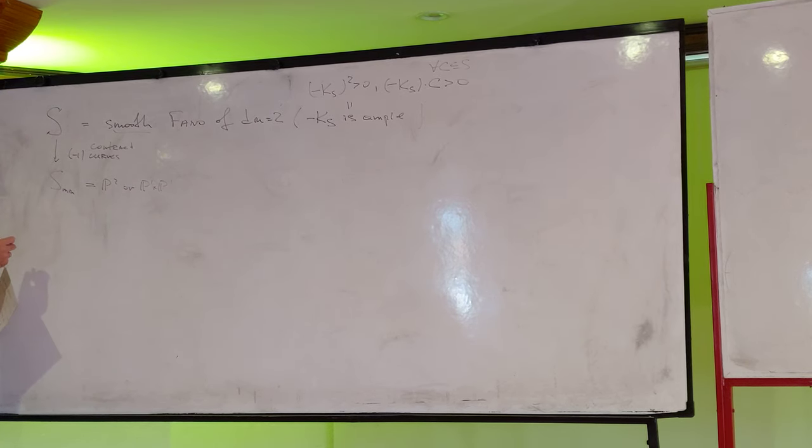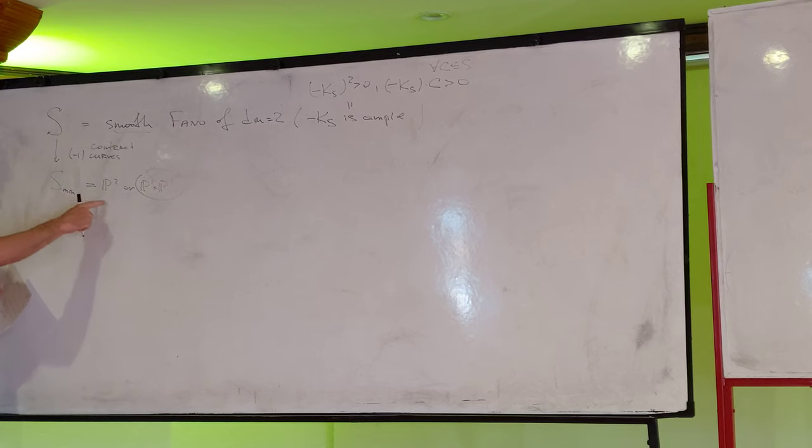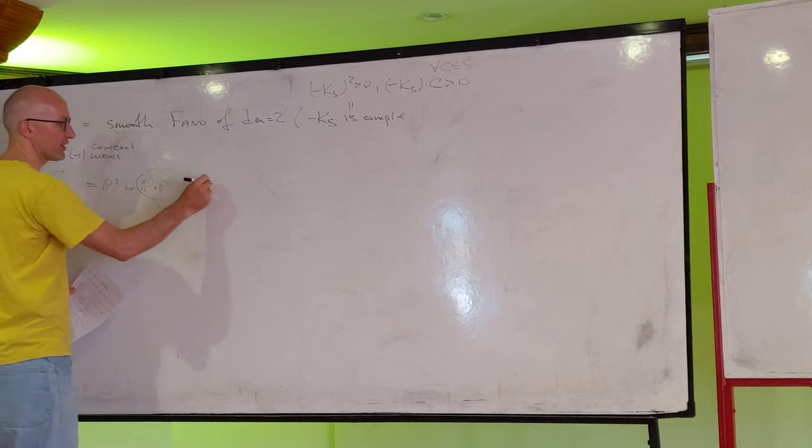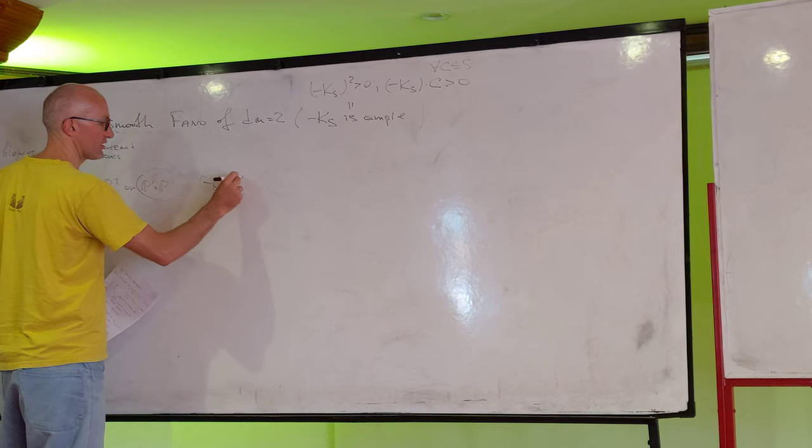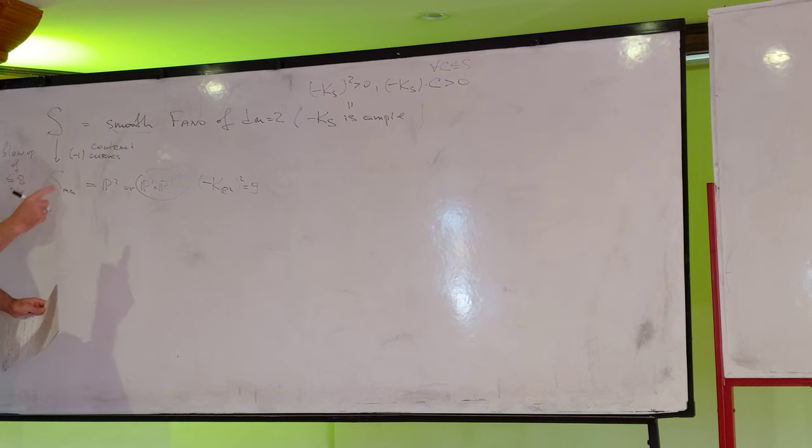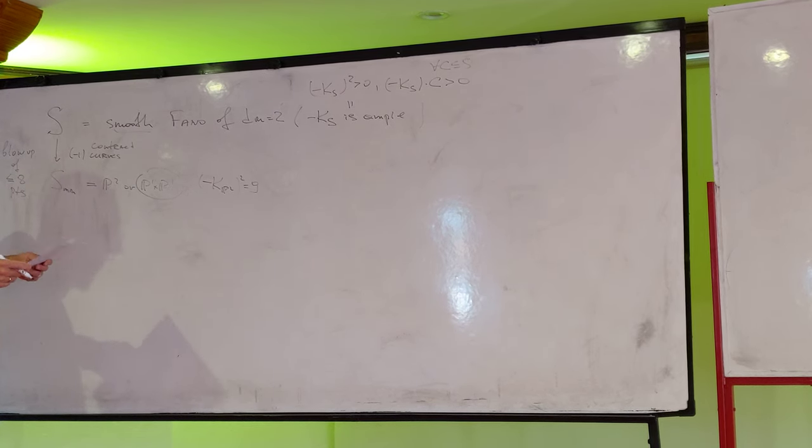And this basically gives you the classification. This is a special case, and you can always assume this is P2. In particular, you can have bounds. And this is blow-up of, at most, eight points in general position. And the reason is that canonical, square of canonical divider of P2 is nine. And each time you blow up, square of canonical divider drops.